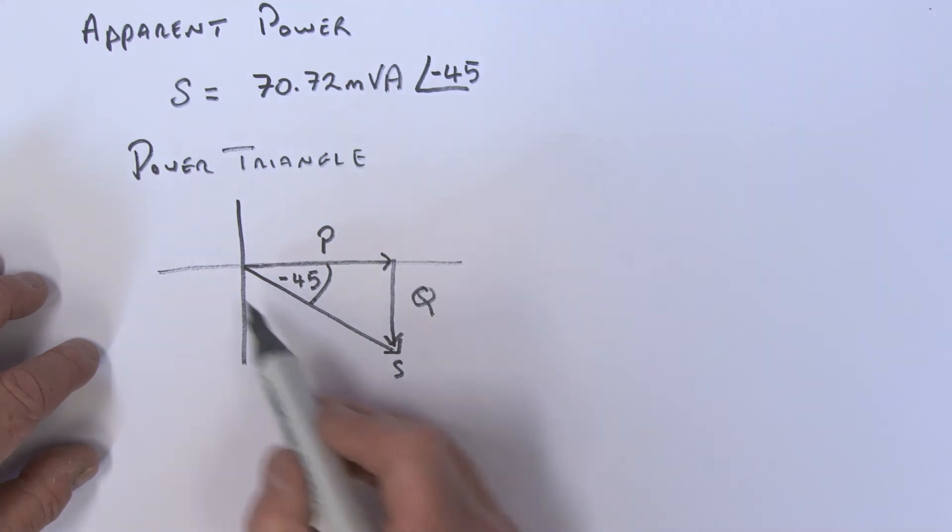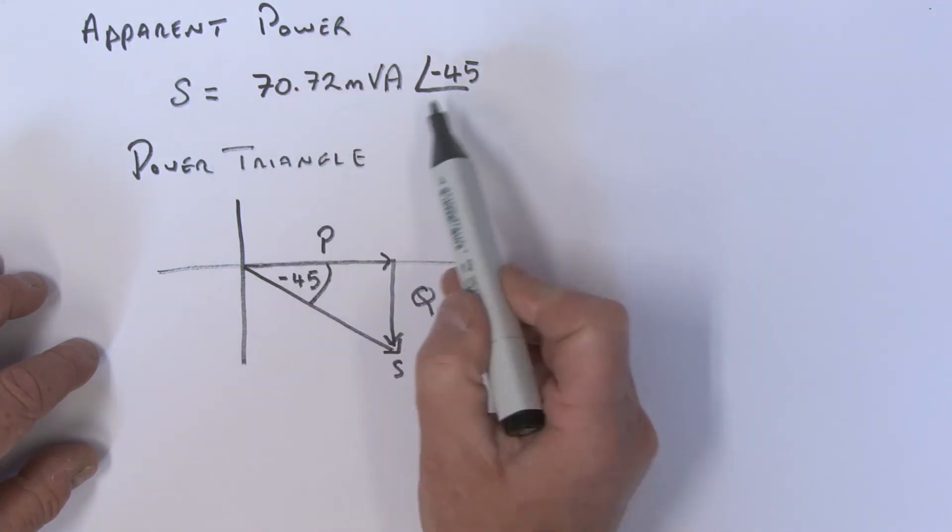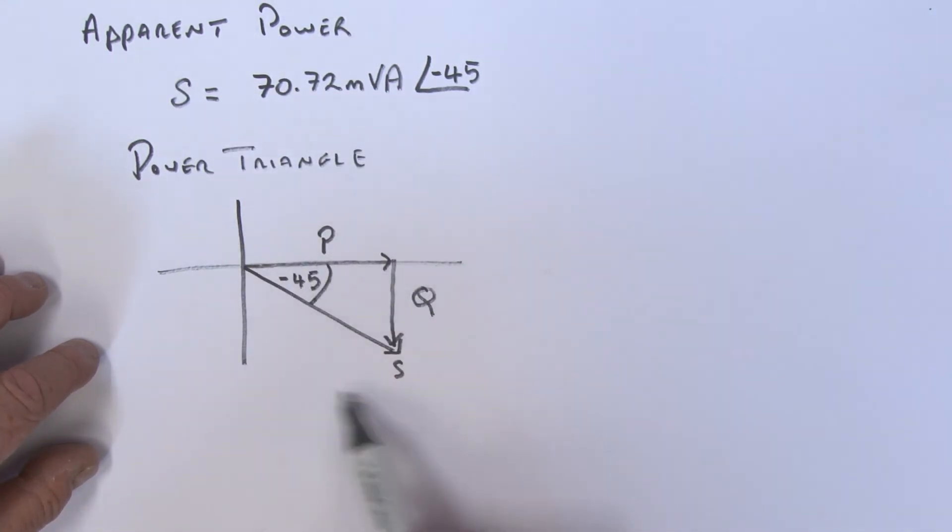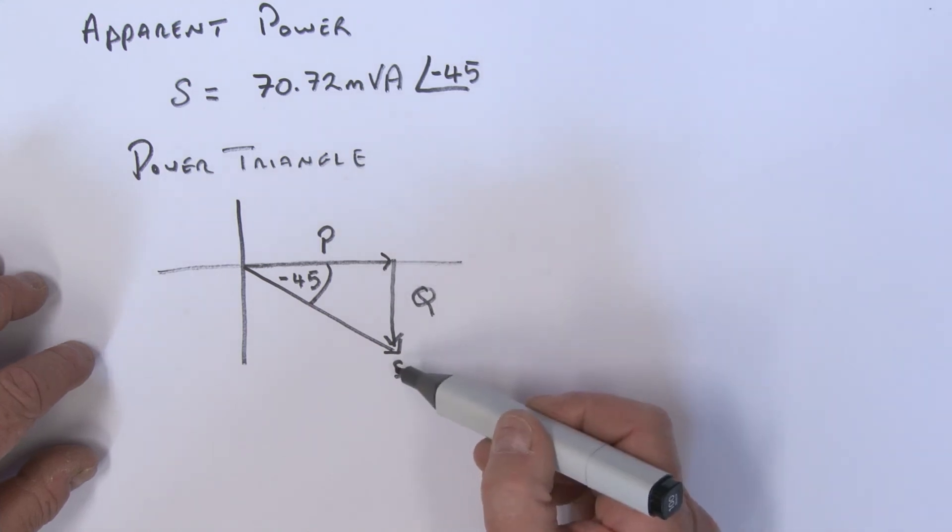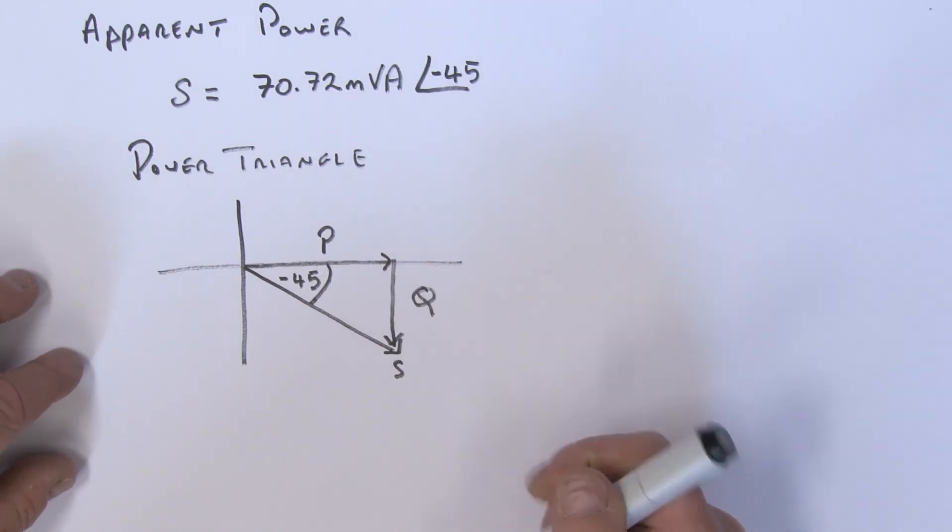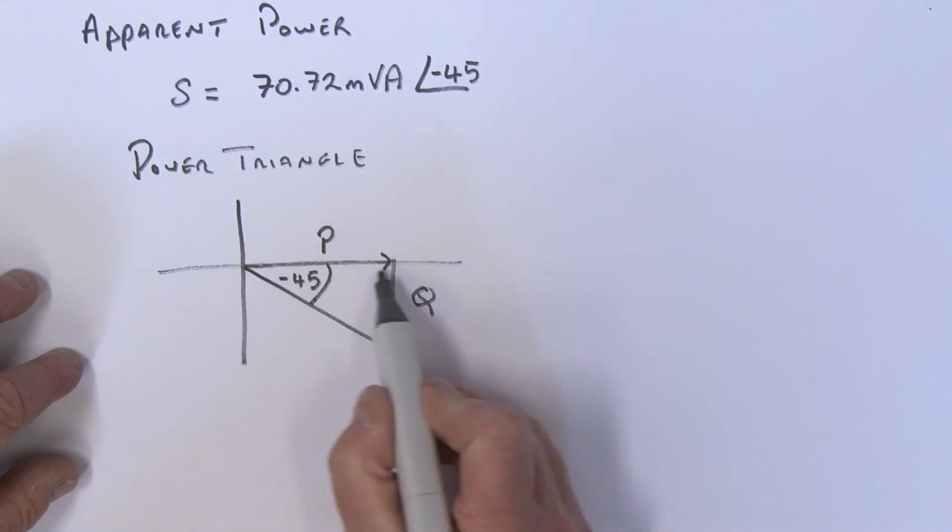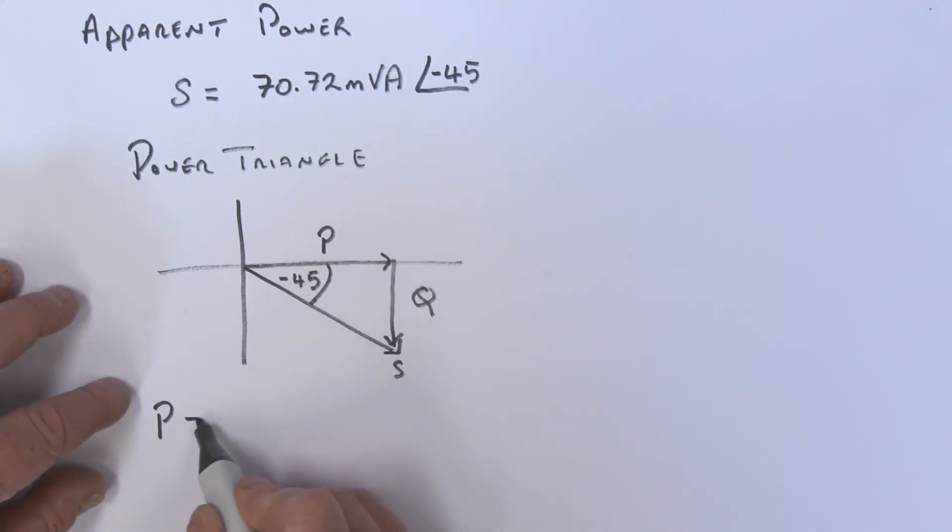And then of course this angle over here, what is that? That's that minus 45 degrees. So look, what are we trying to find here? Well, we know the apparent power - there it is. Let's see if we can now, knowing this triangle, we can now find the real power, we can actually find the reactive power Q.